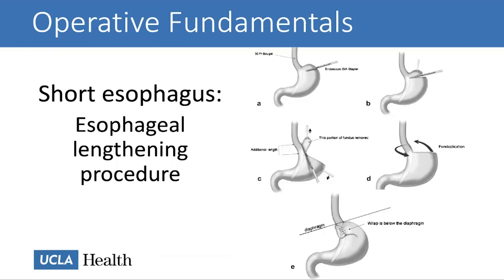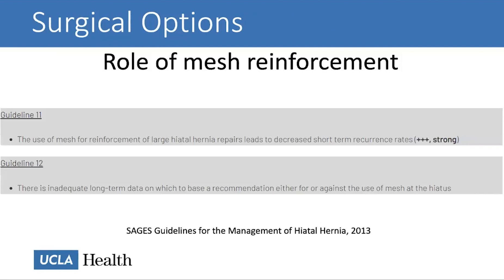If insufficient esophageal length is obtained — a condition called short esophagus — the usual treatment is to remove a wedge of the gastric fundus, creating a tubularized section of stomach just below the GEJ. This new portion serves as a lengthening of the esophagus, allowing the wrap and stomach to sit in the abdomen without tension on the repair.